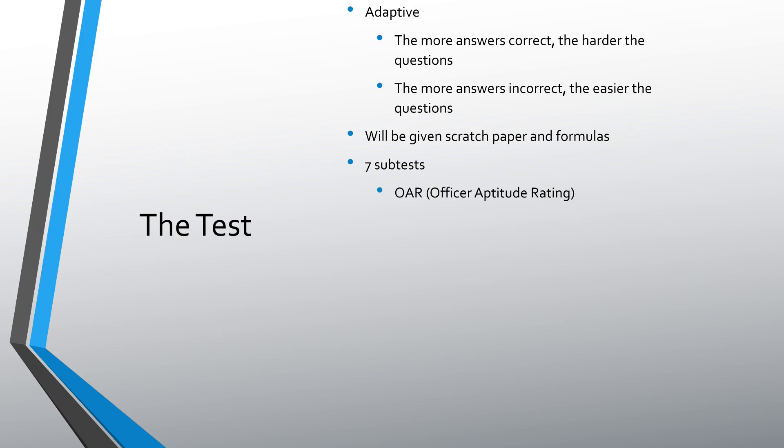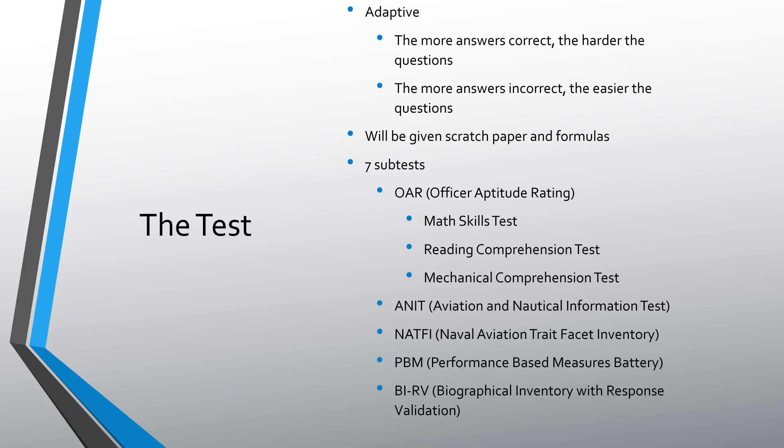So the seven subtests you're going to have to take. The OAR has three of them. So the OAR is your officer aptitude rating, which I'm actually going to talk about after this slide. It is the math skills test, your reading comprehension test, and a mechanical comprehension test. And then the last four tests you're going to have to take is the ANIT, the NATFI, the PBM, and the BIRV. So I'm going to talk about each of these things. Like I said before, feel free to click on those timestamps to get to each of these things.